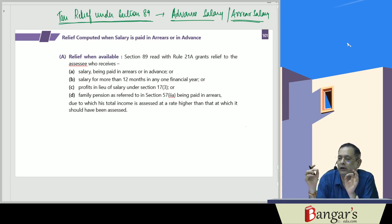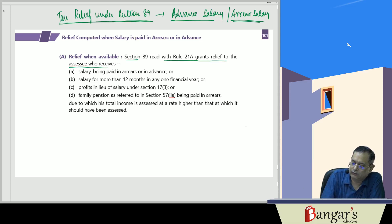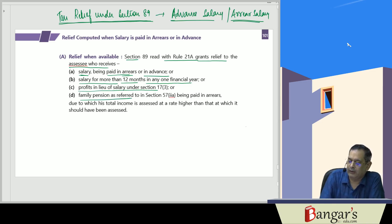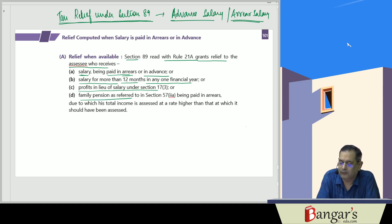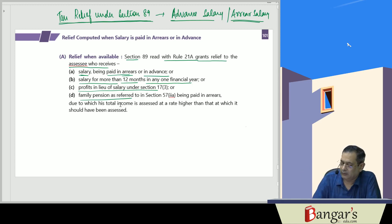Therefore we provide relief. Section 89 read with Rule 21A grants relief to the assessee who receives salary paid in arrears or in advance, or salary for more than 12 months in any one financial year, or profits in lieu of salary, or family pension received in arrears — due to which the total income is assessed at a higher rate than it would otherwise have been, because a lump sum amount is received together.